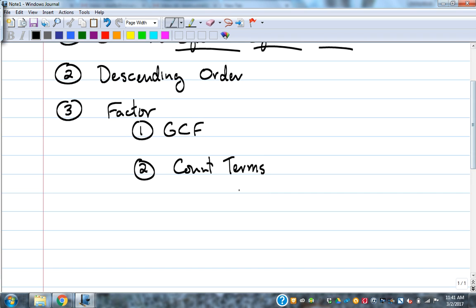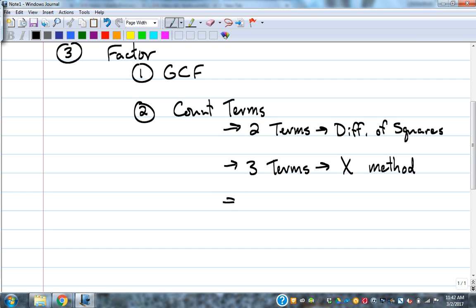Based on the answer to how many terms it has, if there are two terms, what are we going to look to do? Yeah, that's right, difference of squares. I'm just going to abbreviate. There are three terms. X method, same things we've done before. And then the four terms, Greek. We know the process. You've got to get better execution.